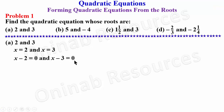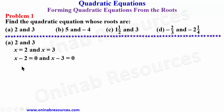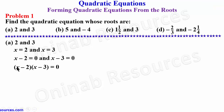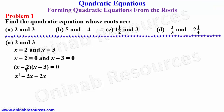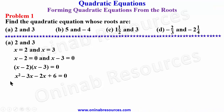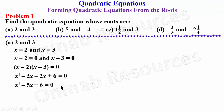Subtracting 3 from both sides we have x minus 3 is equal to zero. Since x minus 2 equals zero and x minus 3 equals zero, their product also equals zero: (x minus 2)(x minus 3) = 0. Expanding: x squared minus 3x minus 2x plus 6 = 0. Simplifying the middle terms gives negative 5x, so the final equation is x squared minus 5x plus 6 equals zero.